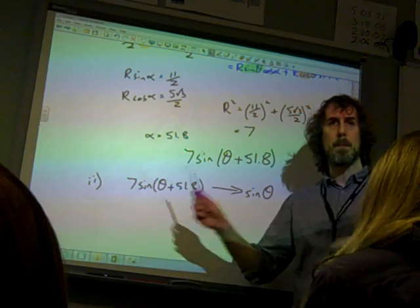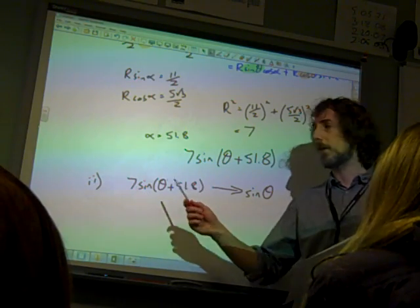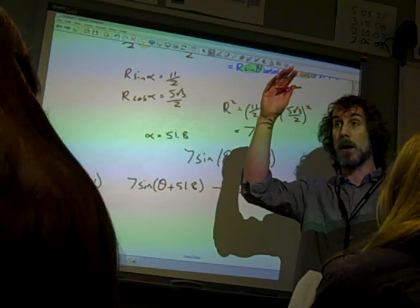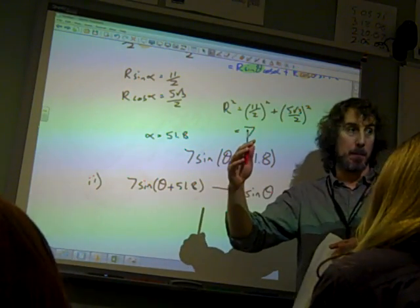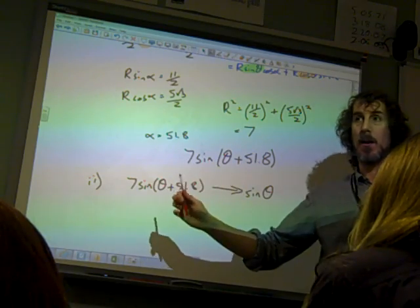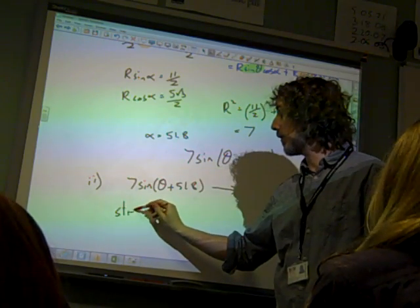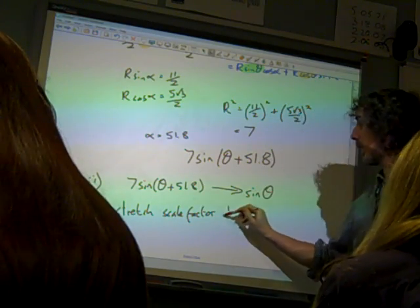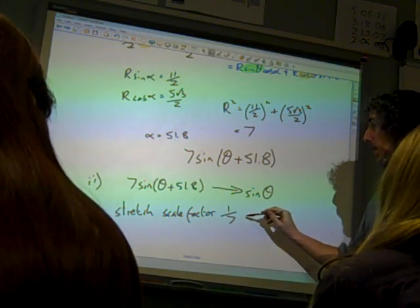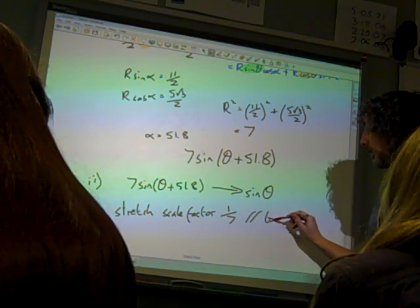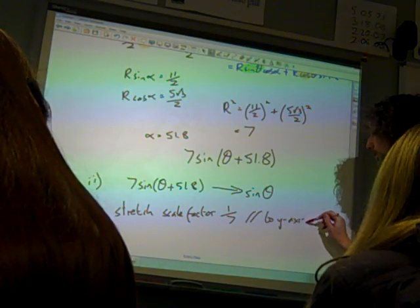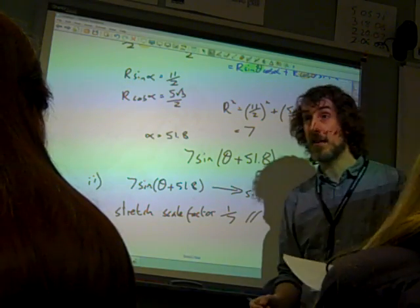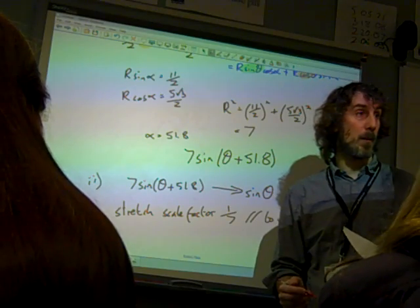So the multiplying by a 7, they're perpendicular, so the order doesn't matter. The multiplying by a 7, that would be stretching, scale factor 7 in the y direction. But it's the other way around, doesn't it? Because we're undoing that. So it's a stretch, scale factor 1/7 in the y direction, parallel to the y axis. That's the first one. But it doesn't matter which order to do this.